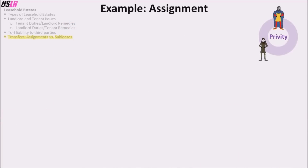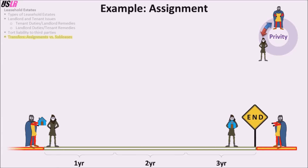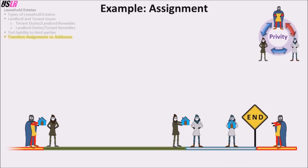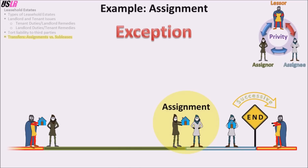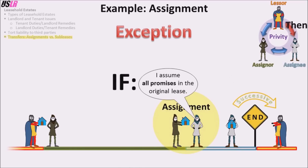In an example, a landlord and tenant have a three-year term of years lease. Two years have gone by and the tenant decides to transfer the remaining year to someone else — this is an assignment. The lessor and the assignee are in privity of estate because their interests are successive, meaning they are liable to each other for the original lease's covenants which run with the land. The lessor and the assignor are no longer in privity of estate, but they maintain privity of contract until the original lease terminates — making the assignor secondarily liable if the assignee is unavailable or unable to pay. The lessor and the assignee are not in privity of contract because they have not contracted with each other, unless the assignee expressly assumes all promises in the original lease, in which case the lessor and assignee are in privity of contract.